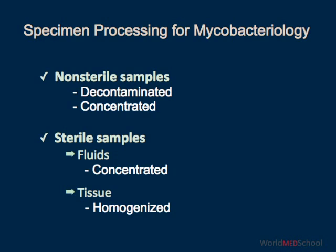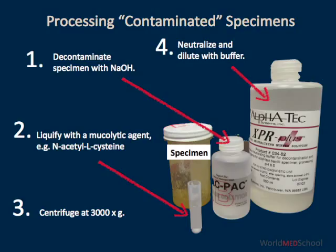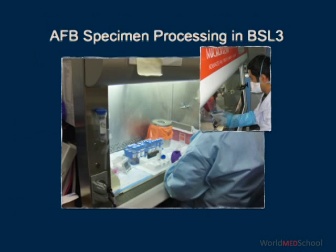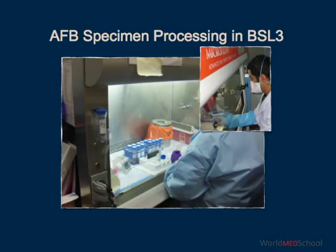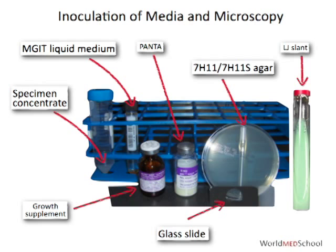This slide shows a sputum sample, which first has to be treated with a mucolytic agent, typically N-acetylcysteine. The oral flora have to be killed by treating the sample with sodium hydroxide. And lastly, this specimen has to be neutralized with some sort of a buffer. The entire process has to be done in a biosafety cabinet, in a biosafety laboratory. And the technologist should only work with one specimen at a time to prevent cross-contamination.